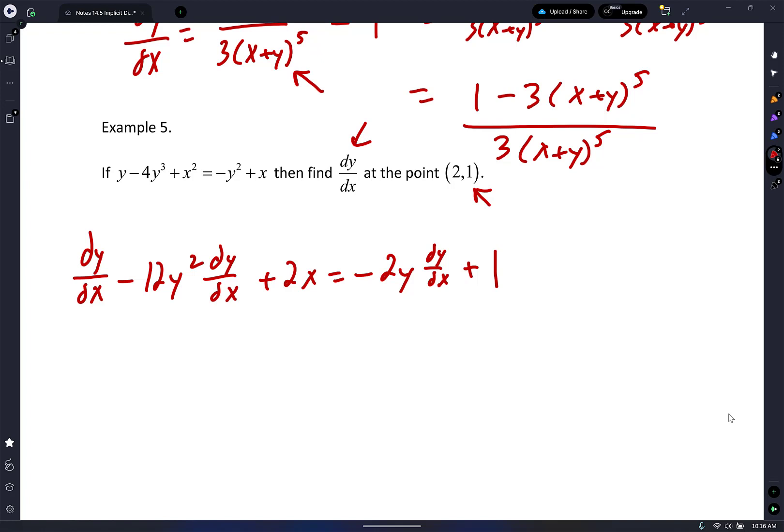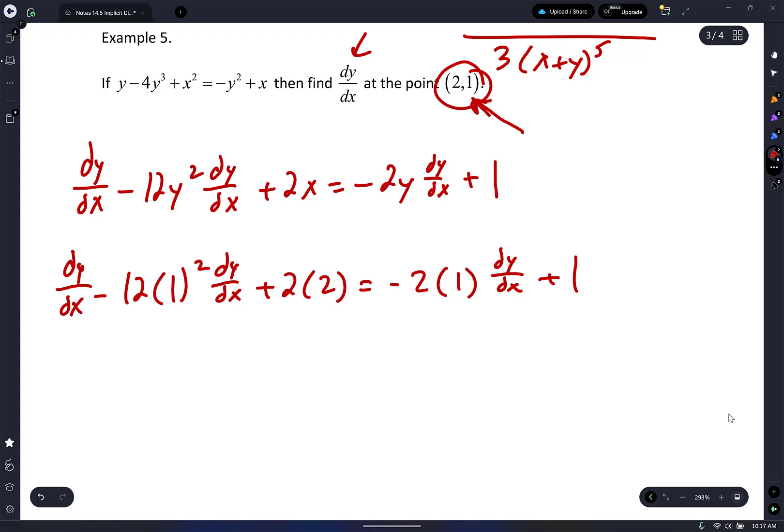I'm going to plug in the point (2, 1). I think that's easier. You could always solve for dy/dx first, but I've always thought plugging in your point right here and then solving for dy/dx I've always thought that was easier. So here we go: dy/dx minus 12(1²) dy/dx plus 2(2) equals negative 2(1) dy/dx plus 1.